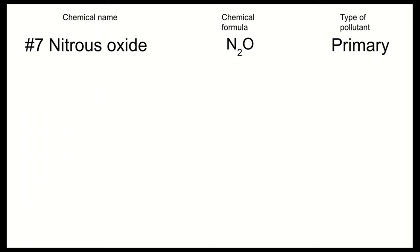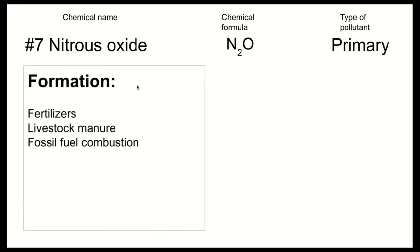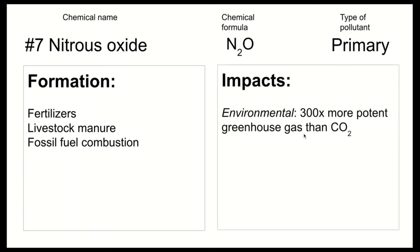Our seventh pollutant is nitrous oxide, N2O — be careful not to confuse this with nitrogen oxides (NO and NO2), which are formed differently and have different impacts. Nitrous oxide is formed and released from fertilizers, manure, and sometimes fossil fuel combustion. In soil and manure, ammonia molecules get converted into nitrous oxide and diffuse into the atmosphere. Its impacts are primarily environmental: nitrous oxide is 300 times more potent as a greenhouse gas than carbon dioxide.